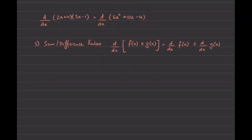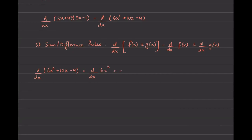To use the previous example: to find the derivative of 6x squared plus 10x minus 4, technically the sum rule would split it into the derivative of 6x squared plus the derivative of 10x, and by the difference rule, the derivative of 4 goes by itself. Then you use the power rule to find the derivative of 6x squared, the derivative of 10x, and the derivative of 4, which is 0 because it's a constant.